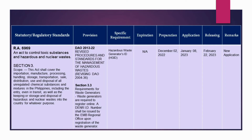In this scenario, I'm the appointed PCO at a manufacturing company of electronic products. Let us refer to the presented table. One of the environmental laws I need to comply with is RA 6969, because our company generates hazardous waste such as electronic waste from non-good products, silica gel, hazardous chemicals, and so on. The first column includes an overview of the statutory or regulatory standard — in this case, RA 6969, an act to control toxic substances and hazardous and nuclear waste. In the second column, I have identified DAO 2013-22 as the provision we need to comply, with the specific requirement shown in the third column: the HGID. The HGID has no expiration, as indicated in the fourth column.